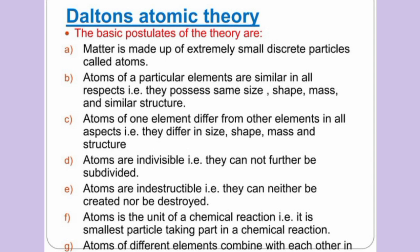Further postulates: (d) Atoms are indivisible — they cannot be further subdivided. (e) Atoms are indestructible — they can neither be created nor destroyed. (f) Atoms are the unit of a chemical reaction, meaning they are the smallest particle taking part in a chemical reaction. Atoms of different elements combine with each other in simple whole number ratios.